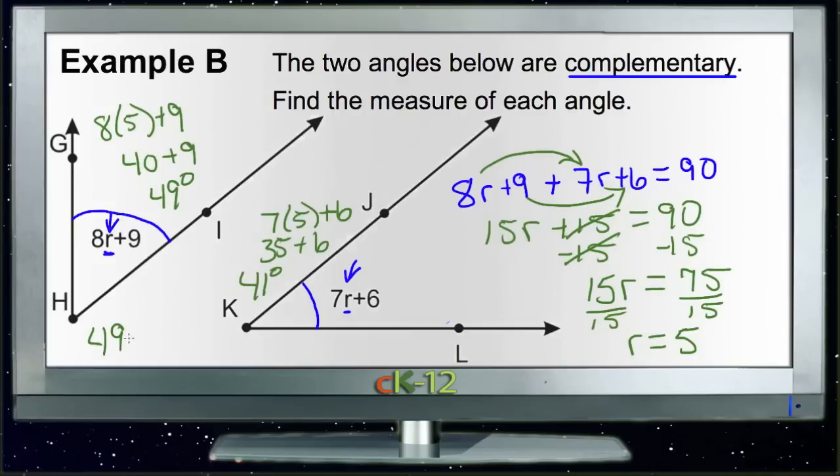And since 49 plus 41 equals 90, we know that our two angle measures are correct.